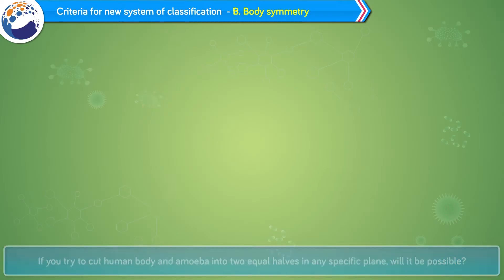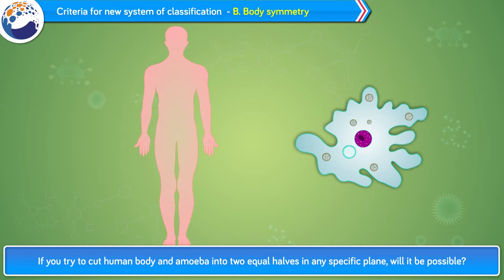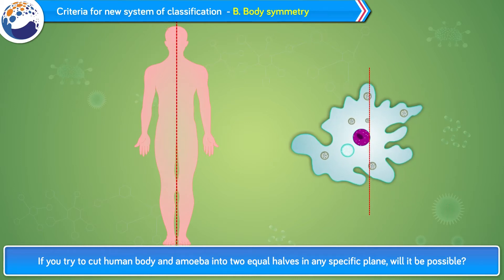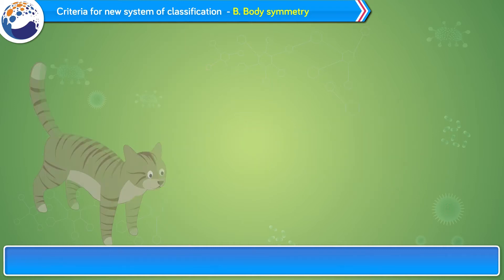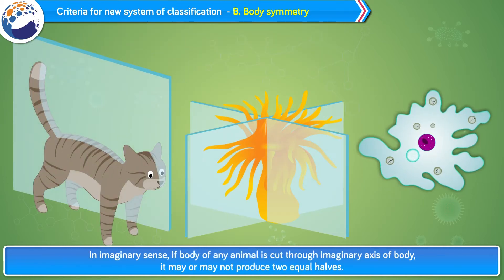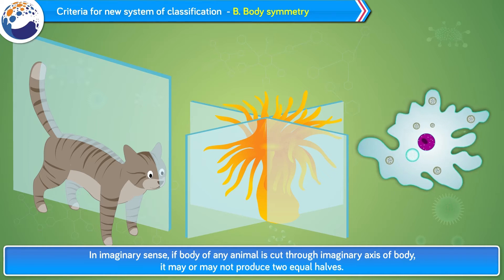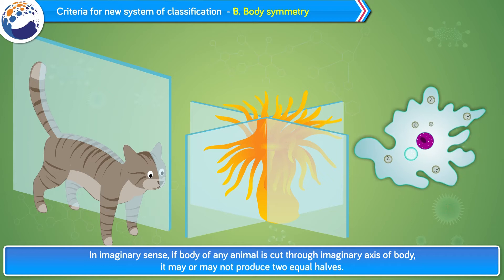Body Symmetry. If you try to cut a human body and amoeba into two equal halves in any specific plane, will it be possible? In an imaginary sense, if the body of any animal is cut through an imaginary axis of the body, it may or may not produce two equal halves.